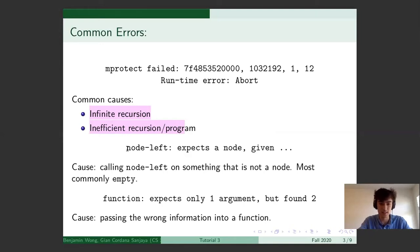The next one is node left or node right, calling this expects a given node, expects a node given something else. So what this means is that you have called node left or node right on something that is not a node. Oftentimes it is empty. So this can be fixed by having a different base case.